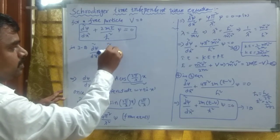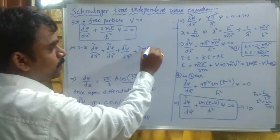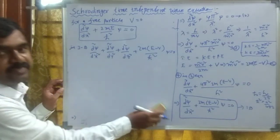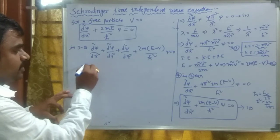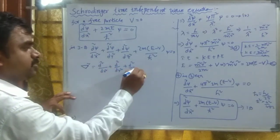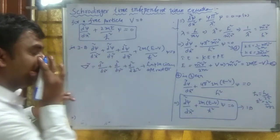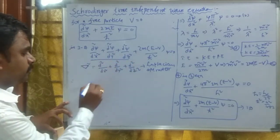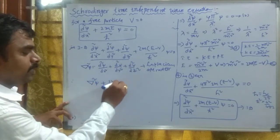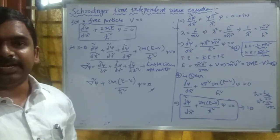For the three-dimensional case, we add the remaining coordinates: d²ψ/dx² + d²ψ/dy² + d²ψ/dz² + 2m(E − V)/ħ² · ψ = 0. The combination d²/dx² + d²/dy² + d²/dz² is called the Laplacian operator, written as ∇² (del squared). So the final equation is written as: ∇²ψ + 2m(E − V)/ħ² · ψ = 0. This is the final form of the Schrödinger time-independent wave equation.